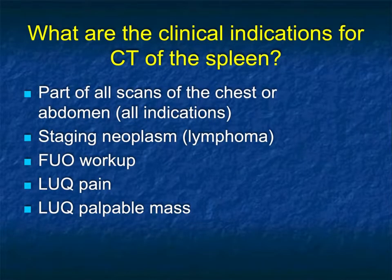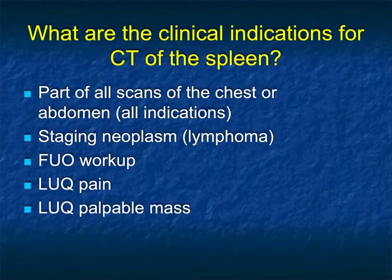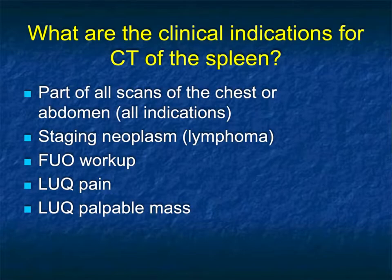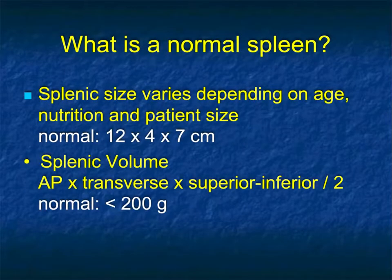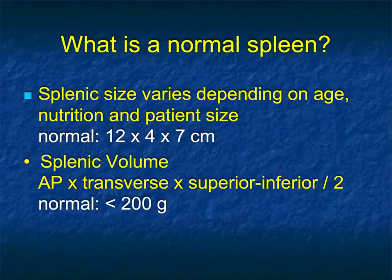Most of the time we evaluate the spleen because it's part of every abdominal CT and in great part every chest CT. When staging neoplasms we visualize it. We pay careful attention when considering splenic abscess, left upper quadrant pain, or a palpable left upper quadrant mass. A normal spleen is typically 12 or 13 centimeters across its maximum length, with volumes typically under 200 grams, though we're not routinely measuring volumes.